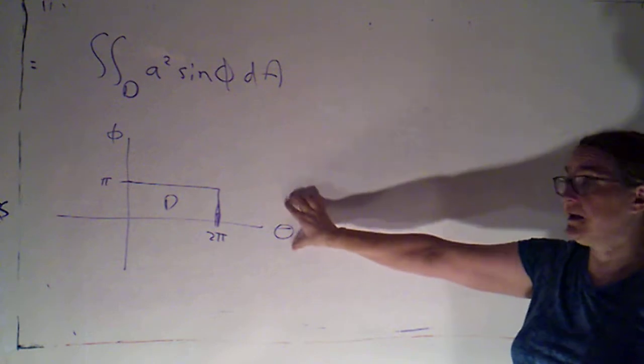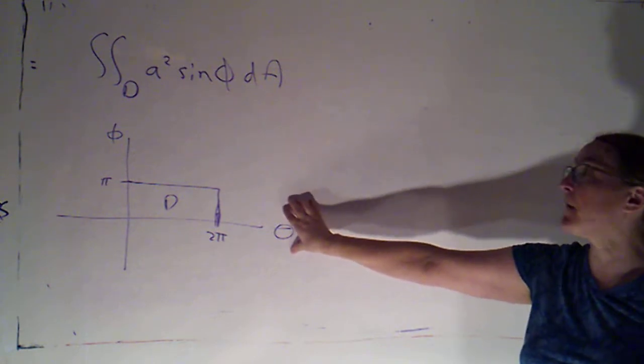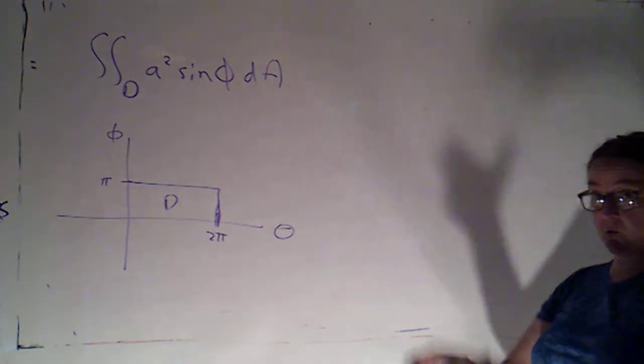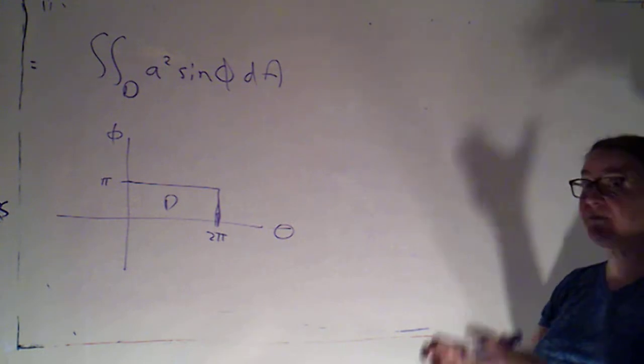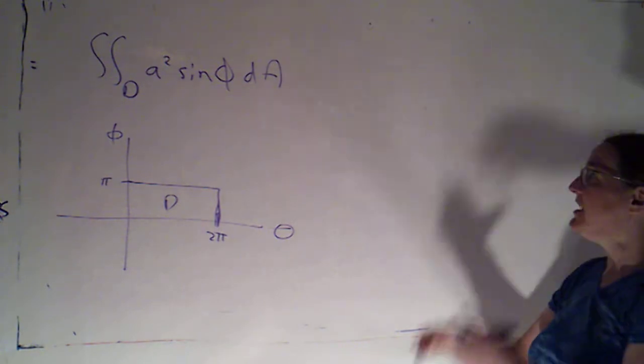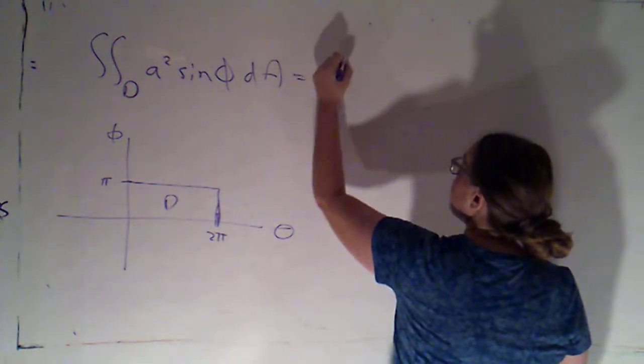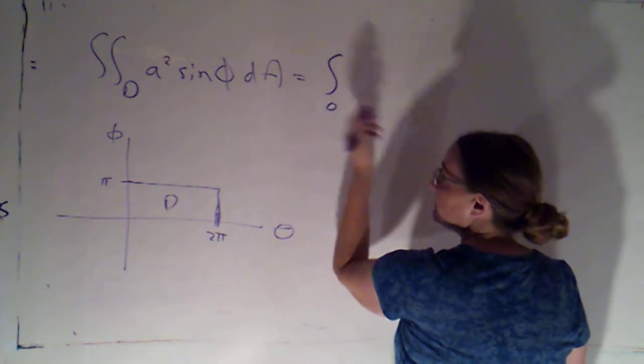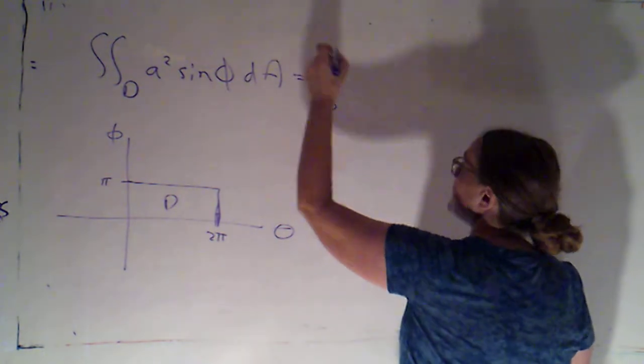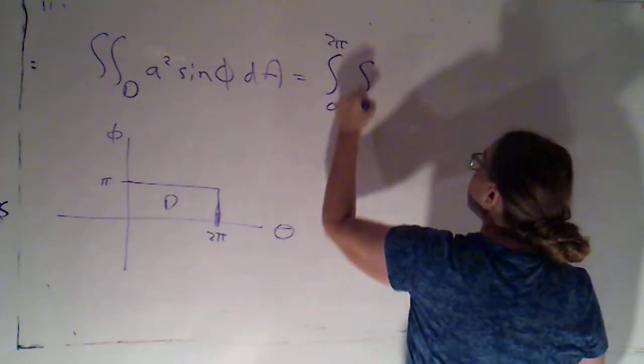And again, we aren't switching to spherical coordinates. These are rectangular coordinates in my parameter plane, and we've been working in those coordinates from the beginning. We aren't switching to them, so there's no scaling factor as I adjust. So I'm just going to say this is the integral from zero to, I guess it doesn't matter, zero to two pi, zero to pi.